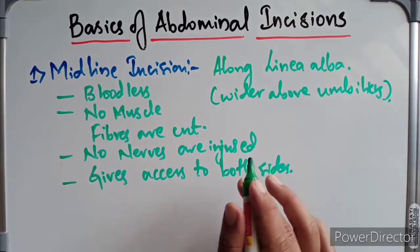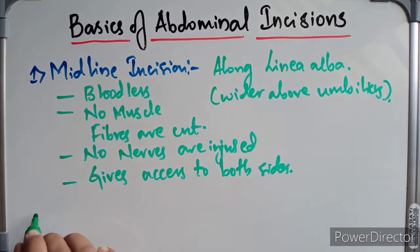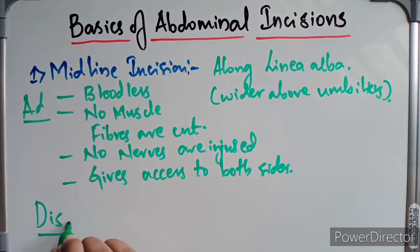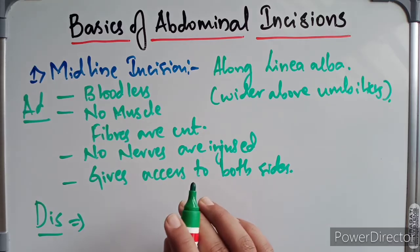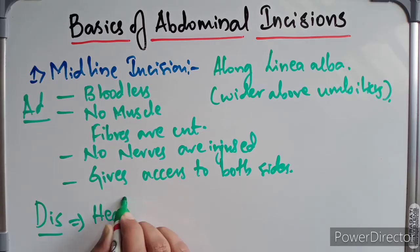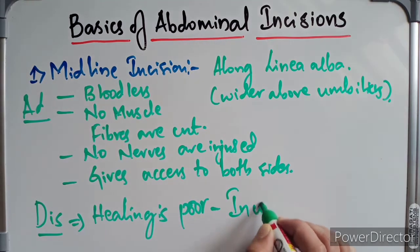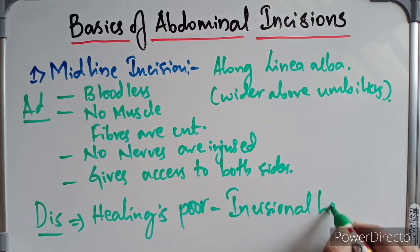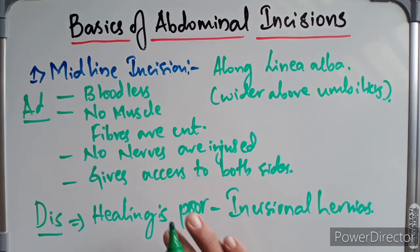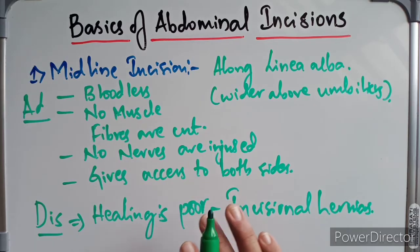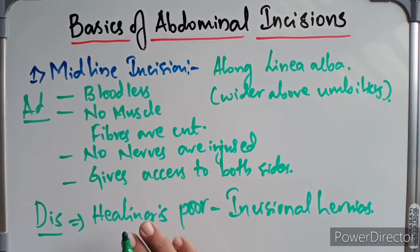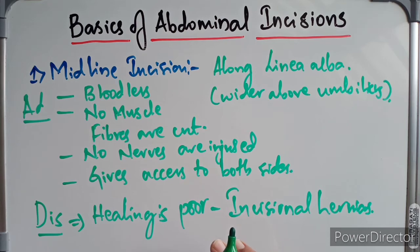The disadvantage of the supra-umbilical incision is that healing is poor, and it may lead to incisional hernias. The infra-umbilical incision is safer because of the close proximity of the recti muscles — they provide better support and therefore the infra-umbilical incision is much safer.